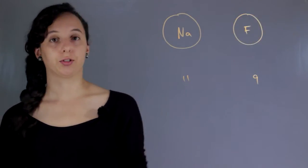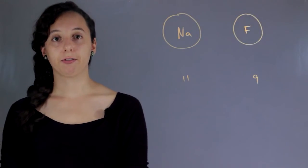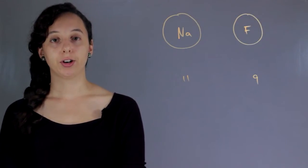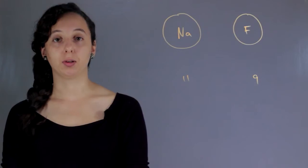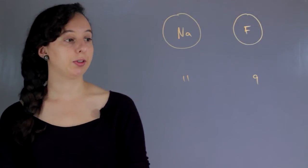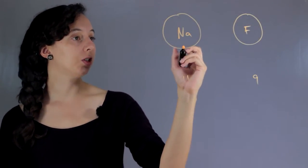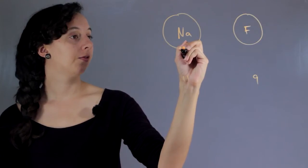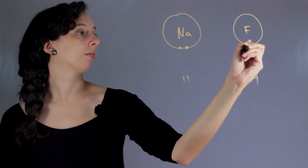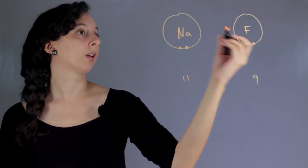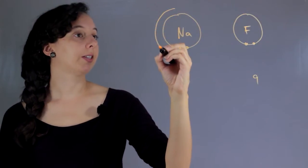And the way that electrons work is that they're in these different shells. And so the first shell always has two electrons and you build up. So these both have two, so their first shell is going to be full.